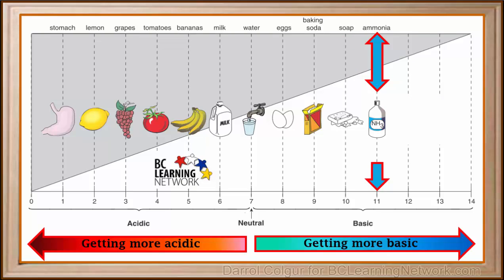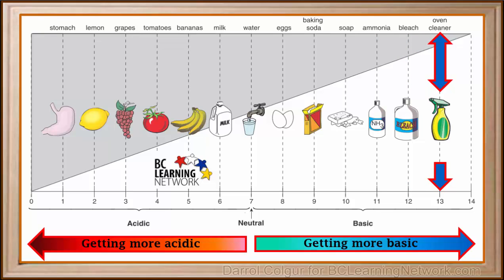Ammonia, which can be used to clean windows and other things around the house, is quite basic with a pH of about 11. Bleach is very basic with a pH of around 12. An oven cleaner, which can dissolve the heavy grease that can collect in ovens, is extremely basic with a pH of about 13.